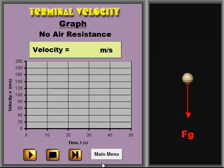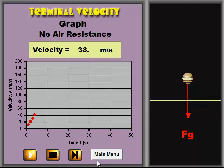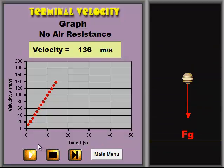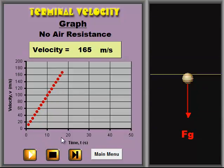There's also a graph for each of these situations. Here's the no resistance case. You can see we're getting essentially a straight line, which is what we would expect if there was no air. And if you took the slope, of course, you would get that 9.8 meters per second squared.